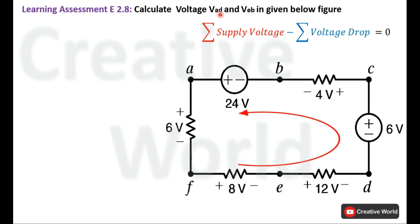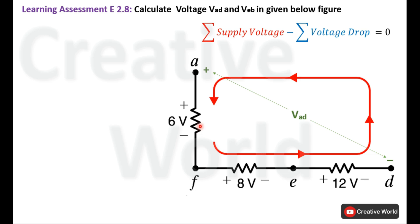First, we will calculate the value of voltage VAD — that is the voltage across terminals A and D. We can omit the rest of the circuit and focus on the remaining section. A key concept: the representation VAD shows that A is on higher potential than D, so A will be the positive terminal and D will be the negative terminal. The direction of current is counterclockwise, and we will calculate VAD using Kirchhoff's Voltage Law.